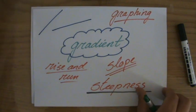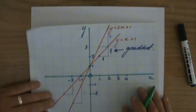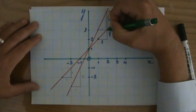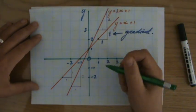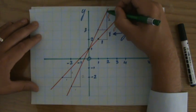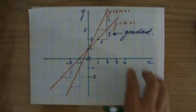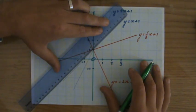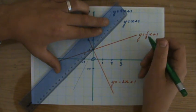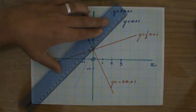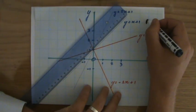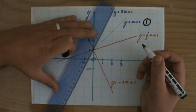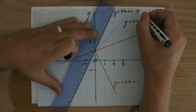The gradient tells you something about the steepness of a line. We looked at these two lines and said that the gradient is: if you go one step to the right, how many steps do you go up to be back on your line? That amount is the gradient. Here we have y equals x plus 1, where the gradient is 1, and y equals 2x plus 1, where the gradient is 2.